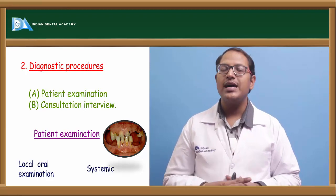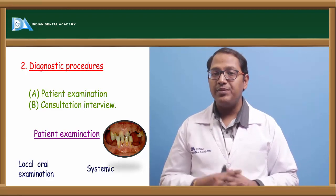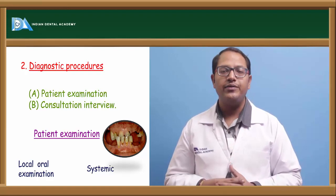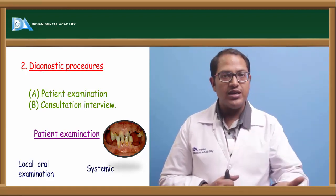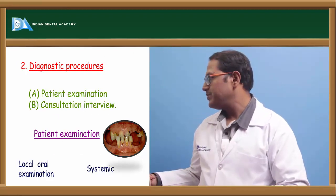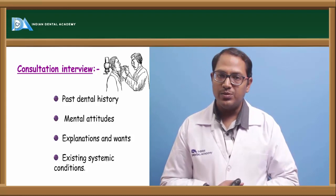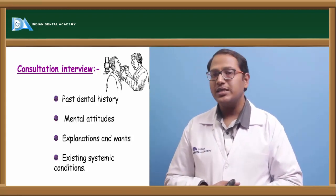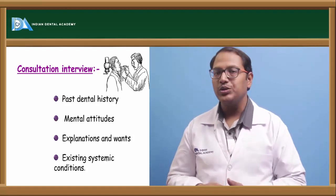Patient examination — local and systemic. If the patient is suffering from any debilitating diseases like diabetes mellitus, we cannot go ahead with immediate dentures because the resorption rate of diabetic patients is already higher; giving an immediate denture will put more pressure on the ridge and more resorption will occur. In the consultation interview, we are supposed to ask about past medical history, past dental history, what the patient wants, and what the systemic condition can worsen or do good to the patient.